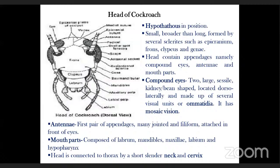Then the antennae — the first pair of appendages. They are many-jointed and filiform, attached in front of the eyes. The mouthparts are composed of labrum, mandibles, maxillae, labium, and hypopharynx.